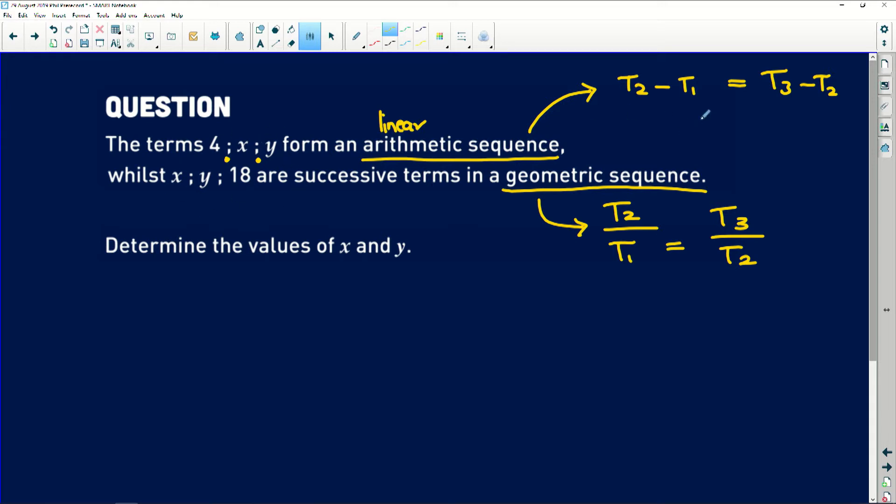Well, if we substitute into these two formulae, first with the linear sequence, term 2 is x minus term 1, which is 4, will give us the same first difference as if we say y minus x. So I'm going to express these in terms of y. So if we make y the subject of the formula, x plus another x is 2x minus 4. That is going to give us our first equation.